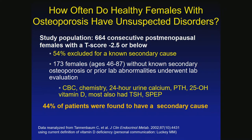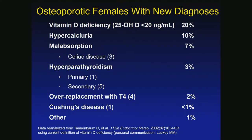About 45% were found to have a secondary cause. Vitamin D deficiency was the most common at about 20%, hypercalciuria at 10%, malabsorption at 7%, hyperparathyroidism, over-replacement with thyroid hormone, one patient with Cushing's disease, and one other problem.